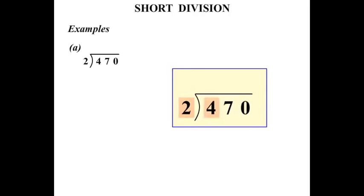So 2 into 4 goes twice. Then we say 2 into 7. Well, that won't go exactly. It will go 3 times and there's 1 left over. 2 into 10 goes 5 times. So our answer there, 235.